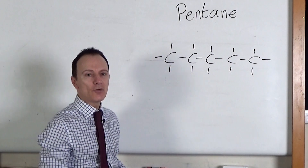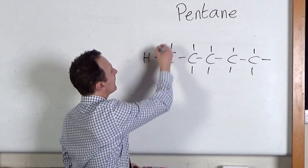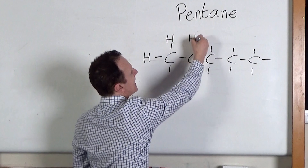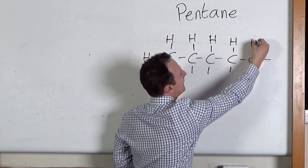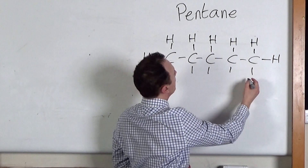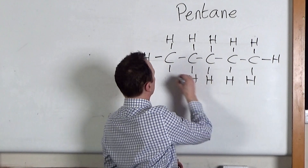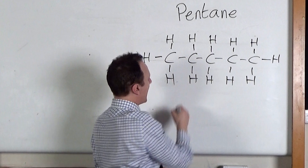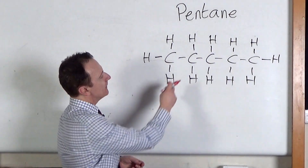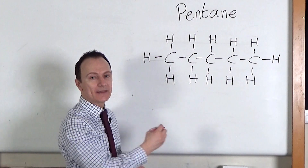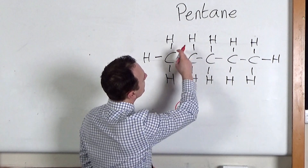It's a hydrocarbon, so we also need to put the hydrogen atoms on as well as the carbon atoms that are already there. So this would be the displayed formula for pentane. And if we write the molecular formula, this time it's going to be five carbon atoms, so C5.